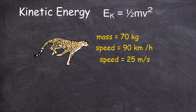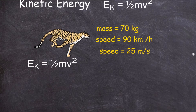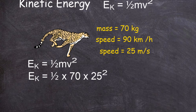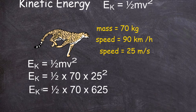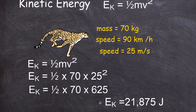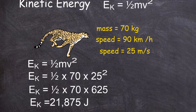We can calculate its kinetic energy — the amount of movement energy it has. Starting with the kinetic energy formula, EK equals one half mv squared, we put in the numbers: EK equals one half times 70 times 25 squared. It's very important that you square the 25 only. So the next line is one half times 70 times 625. Doing that in the calculator gives the kinetic energy of the cheetah as 21,875 joules.